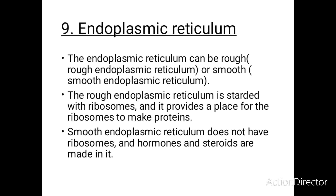The endoplasmic reticulum can be rough or smooth. The rough endoplasmic reticulum is studded with ribosomes on its surface and provides a place where ribosomes can make proteins. The smooth endoplasmic reticulum does not have ribosomes, and hormones and steroids are made there. The endoplasmic reticulum is also responsible for the modification of proteins made by the ribosomes.